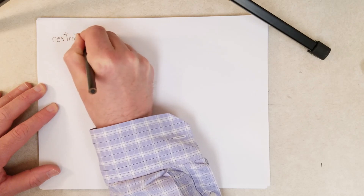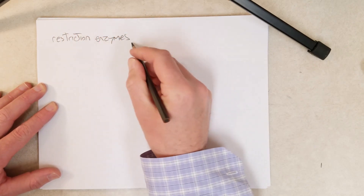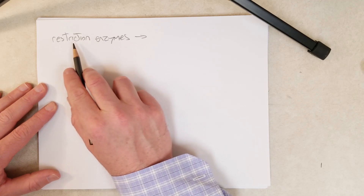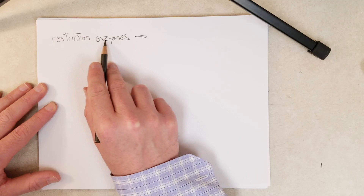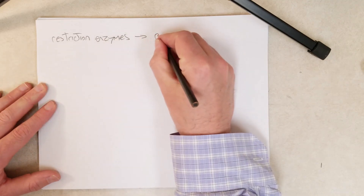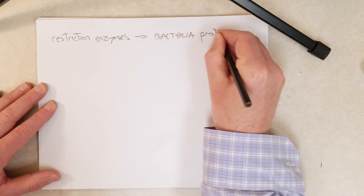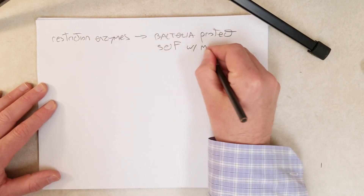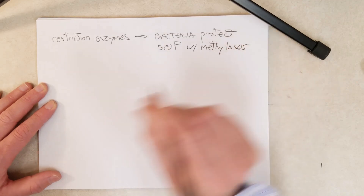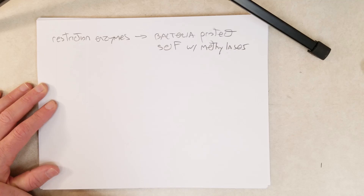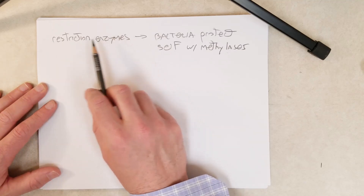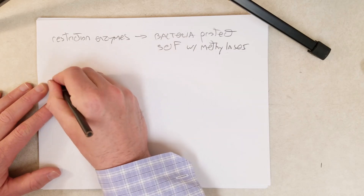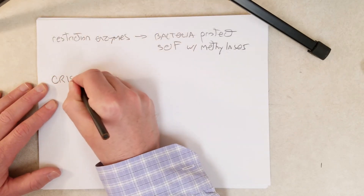To review briefly: we have seen restriction enzymes in earlier videos, and bacteria protect their chromosomes from their own restriction endonucleases using methylases. The methylases recognize the same sequences as the restriction enzymes and methylate them so the restriction enzymes won't cut those sequences.